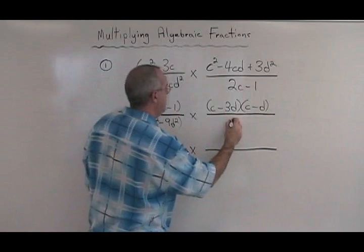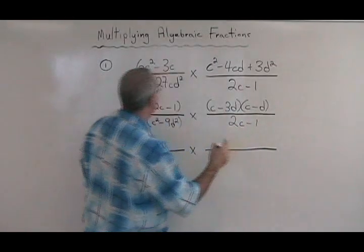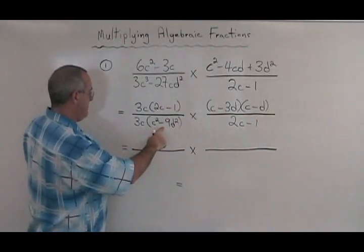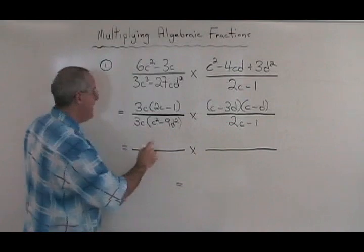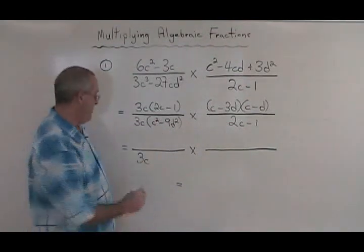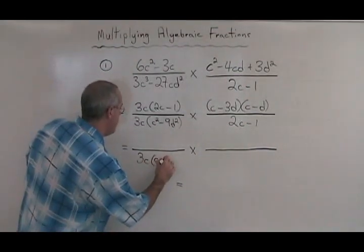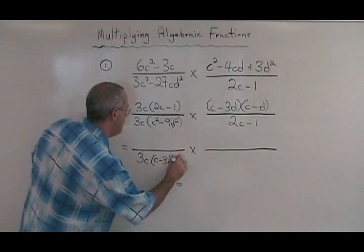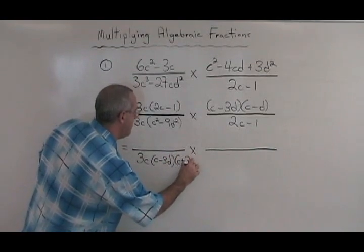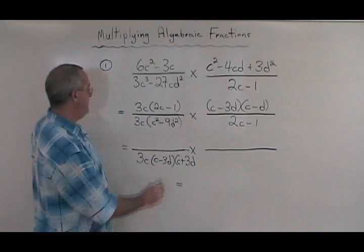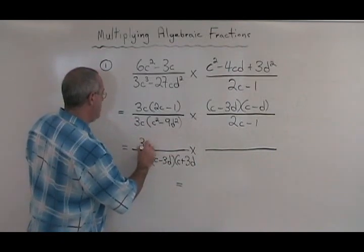This is not factorable, so we just copy it down. Let's factor our difference of squares. c squared minus 9d squared factors to c minus 3d, c plus 3d. The rest gets copied down.